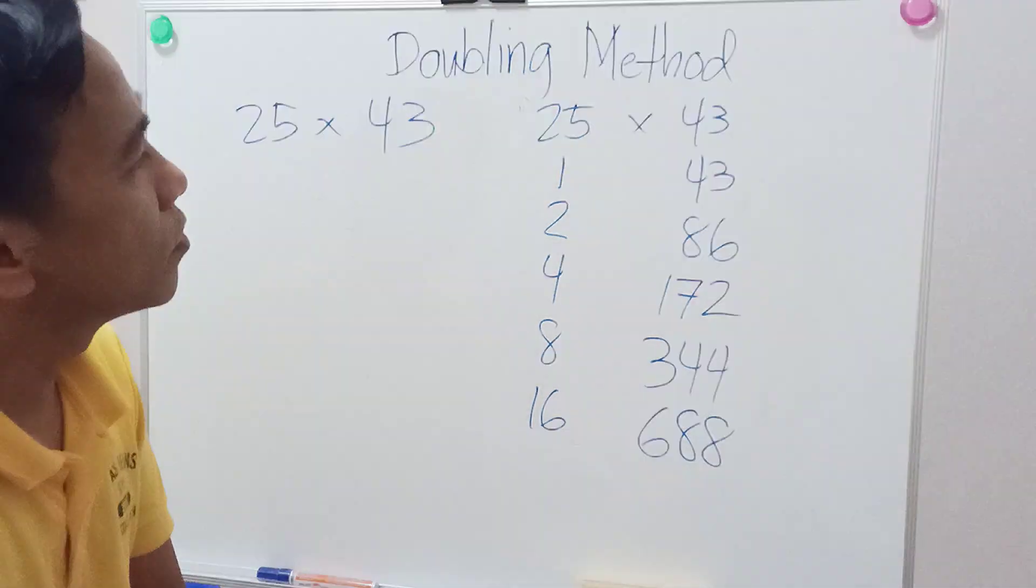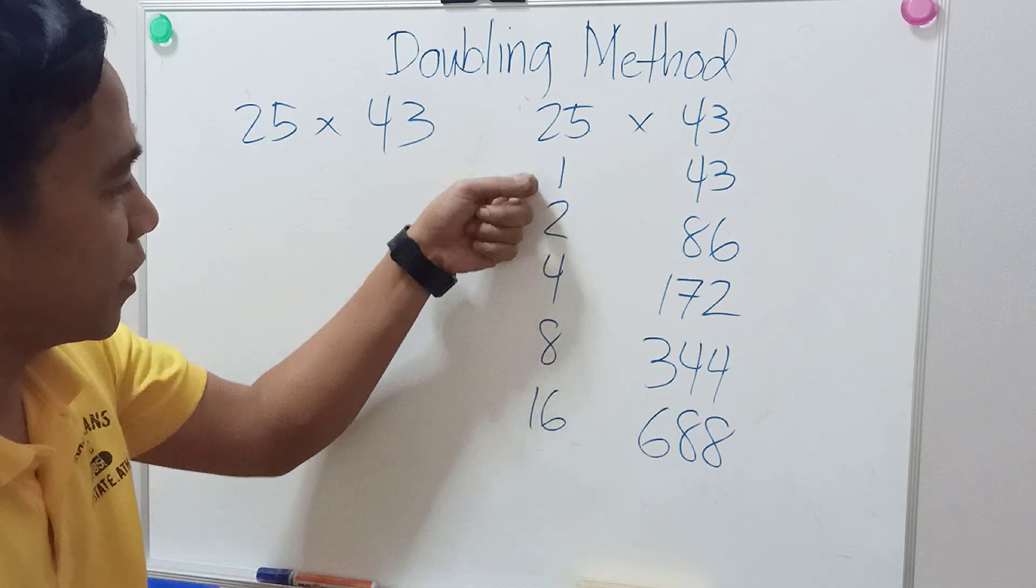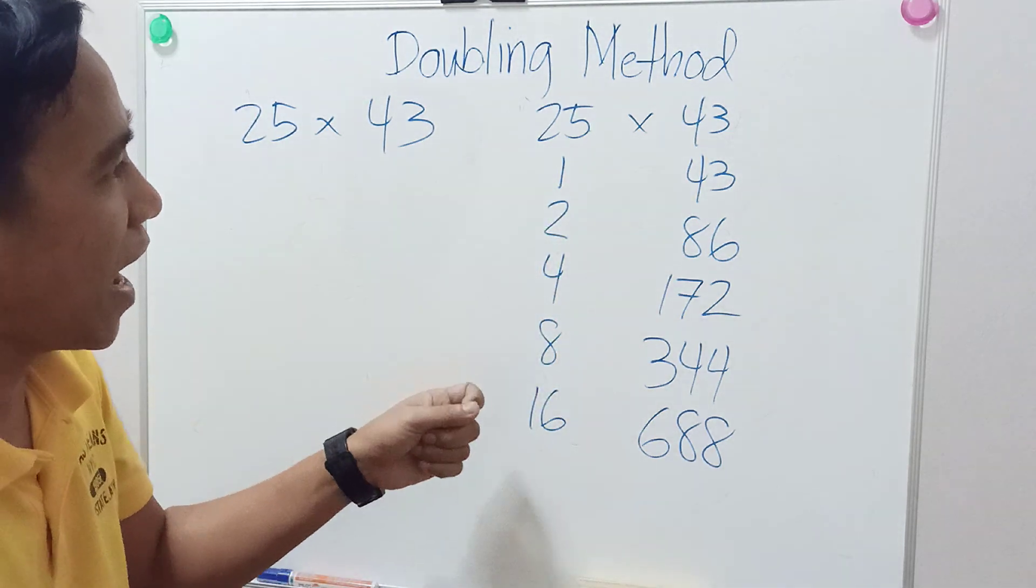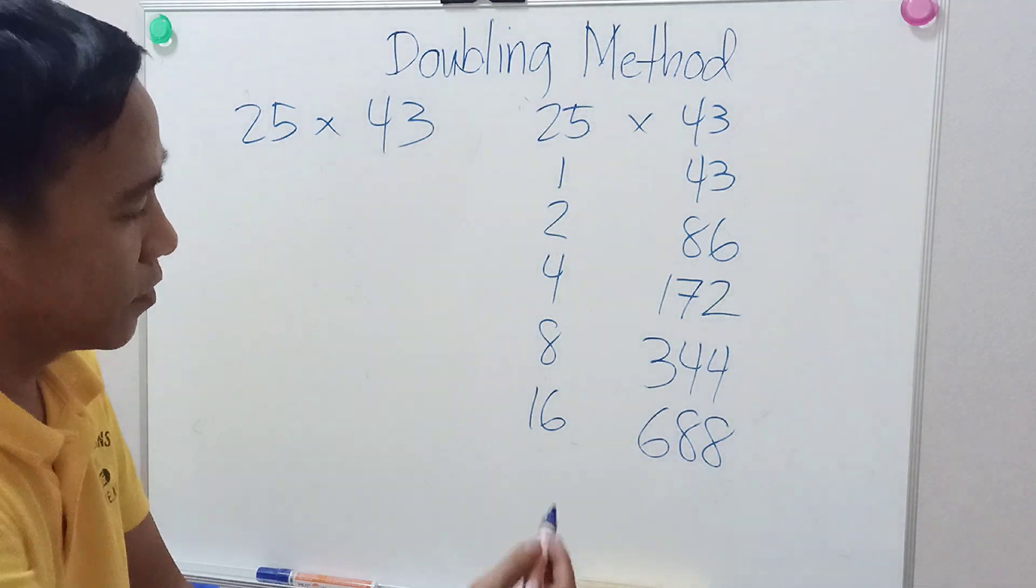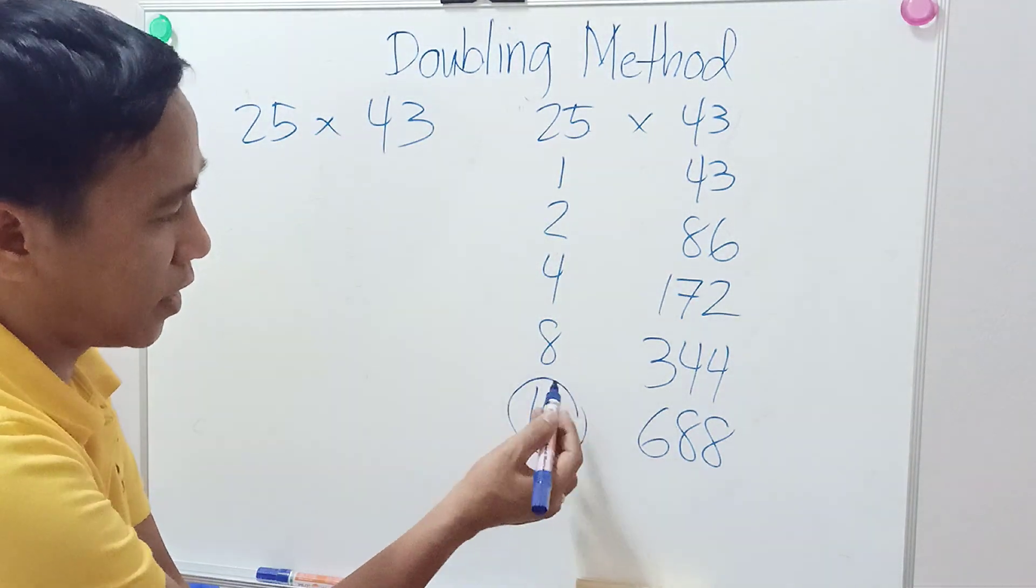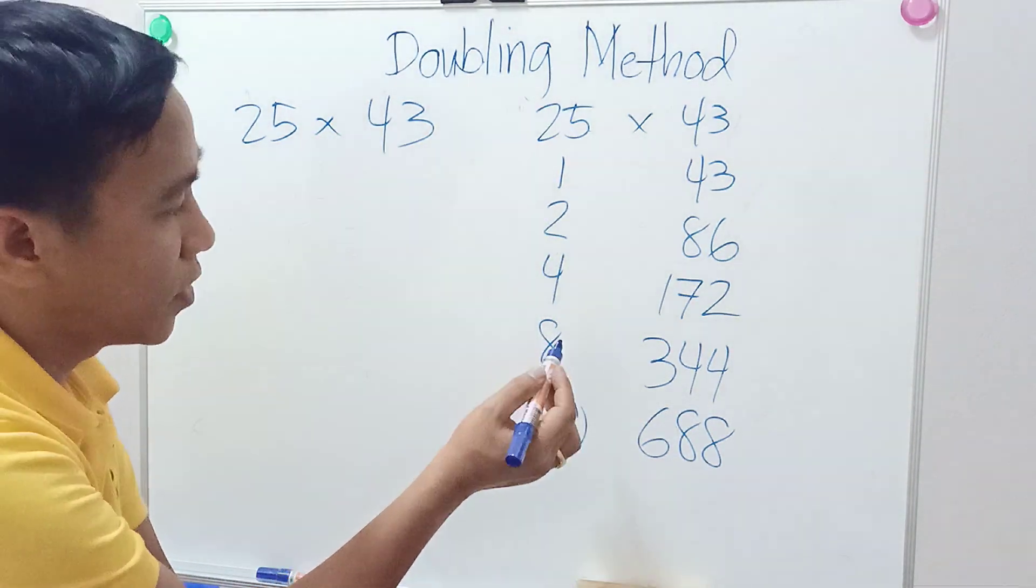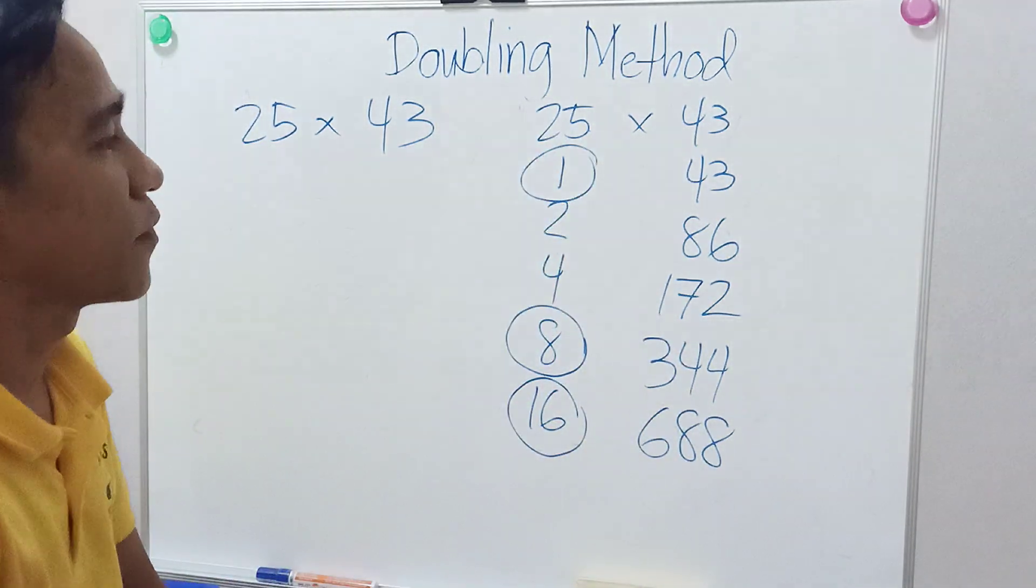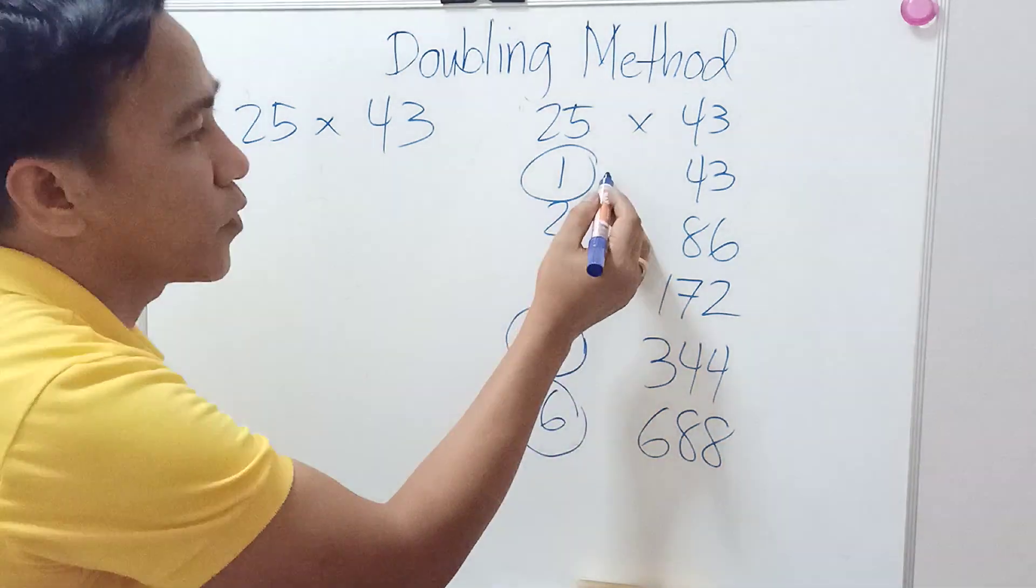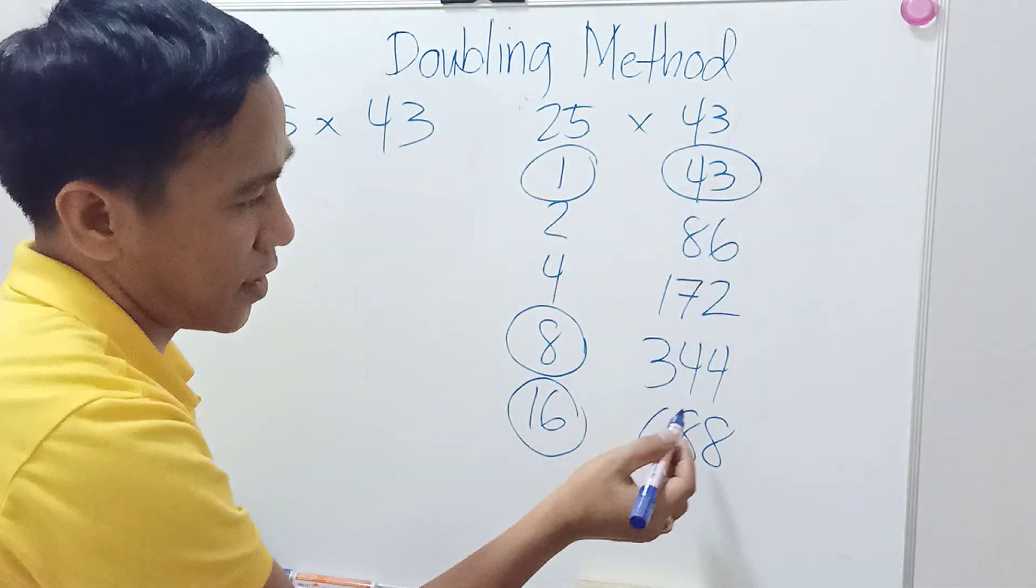Now find the numbers in the left hand side that add up to 25. That is 16 plus 8 is 24, and then plus 1, so that's 25. Then look for the corresponding numbers on the right hand side.